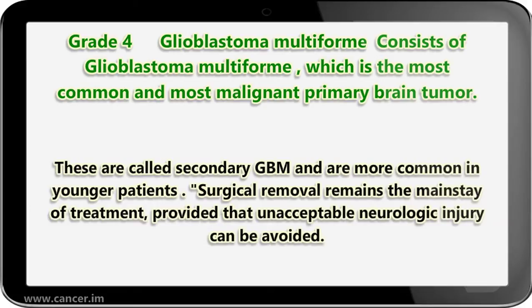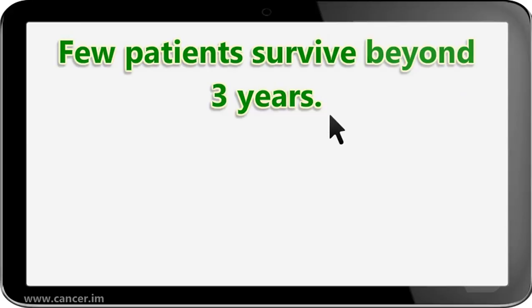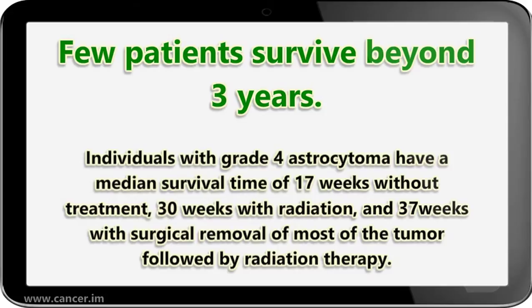These are called secondary GBM and are more common in younger patients. Surgical removal remains the mainstay of treatment, provided that unacceptable neurologic injury can be avoided. Few patients survive beyond 3 years. Individuals with grade IV astrocytoma have a median survival time of 17 weeks without treatment, 30 weeks with radiation, and 37 weeks with surgical removal of most of the tumor followed by radiation therapy.